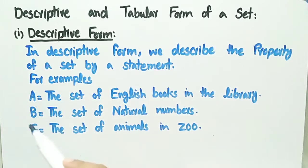For example, here we have described the property of set A by the statement that set A is equal to the set of English books in the library. Similarly, B is equal to the set of natural numbers, and C is equal to the set of animals in zoo. In the three examples we have described the property of the three sets by statements.